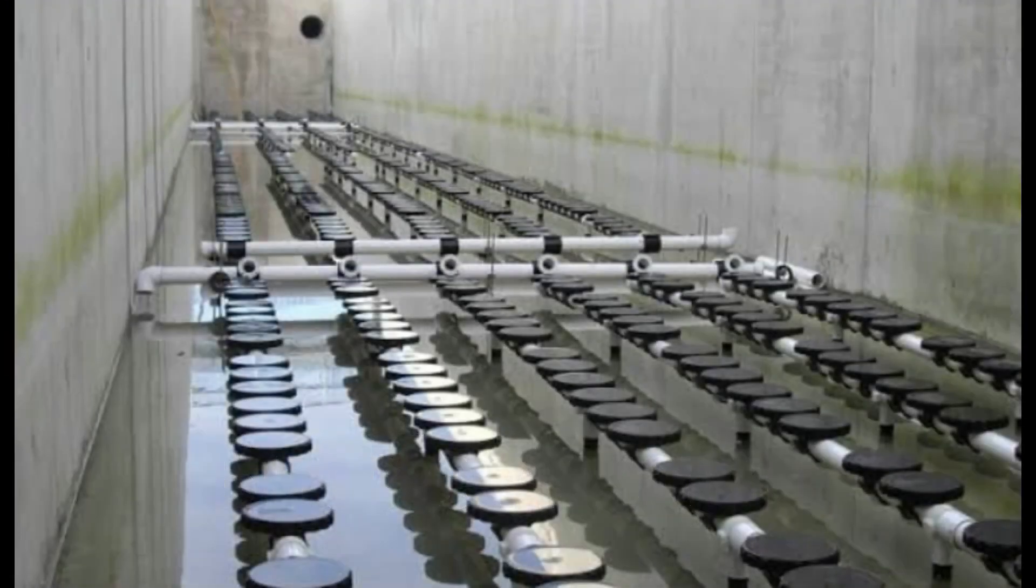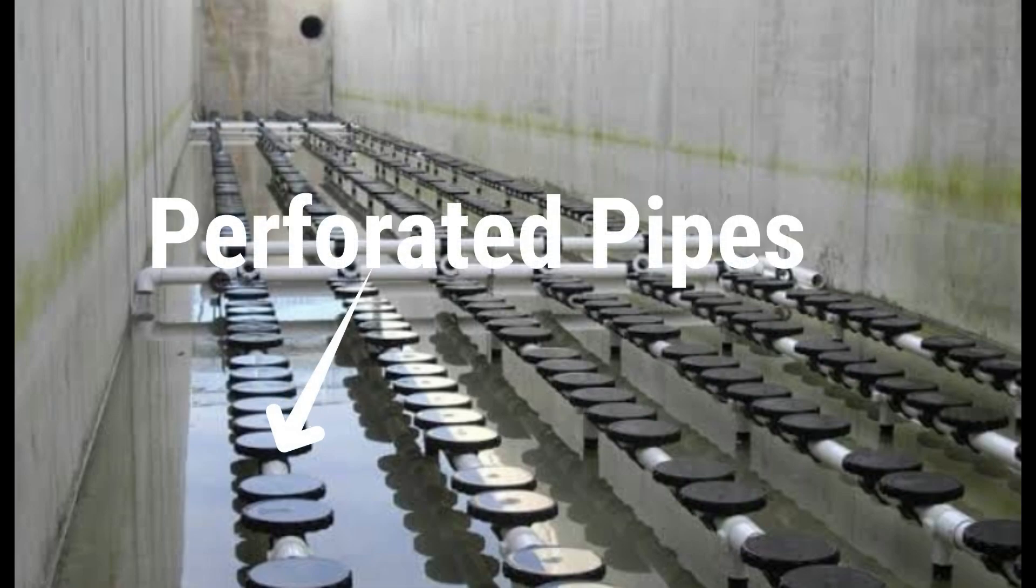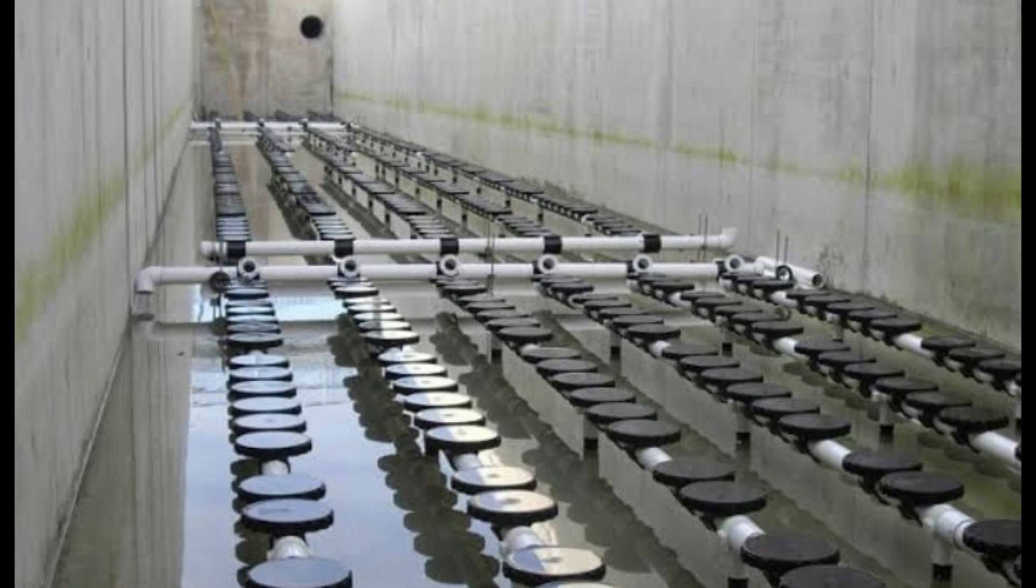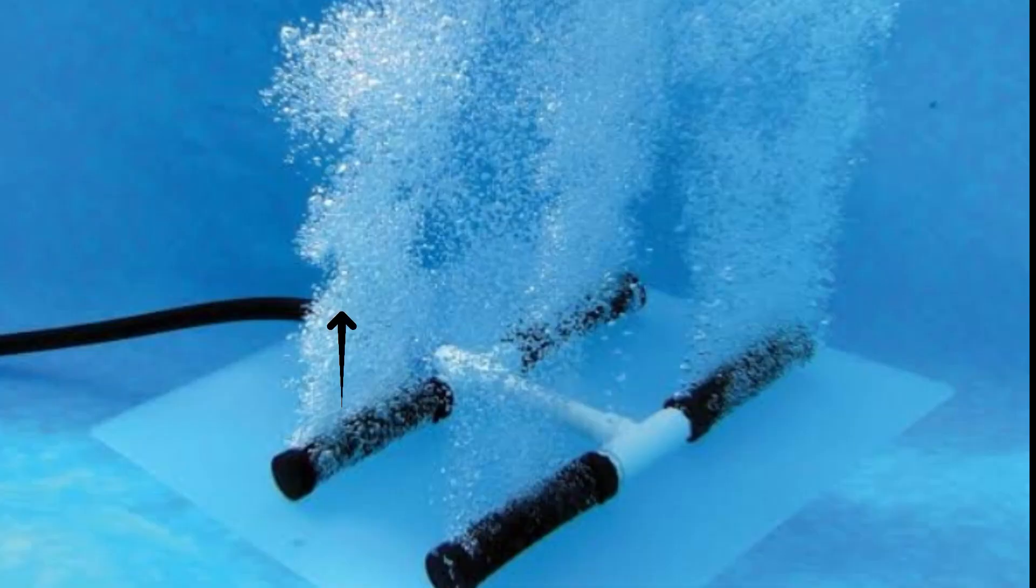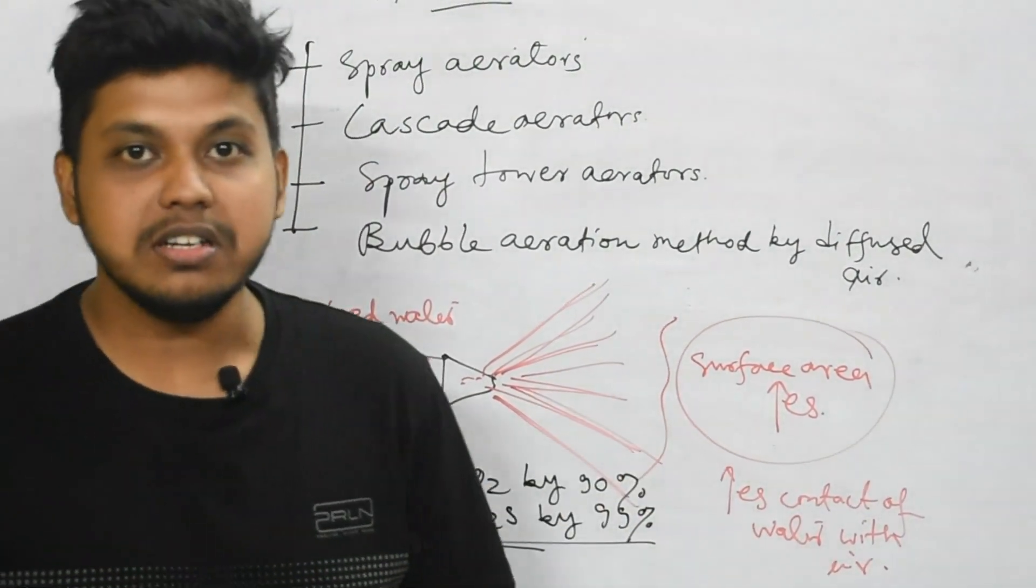Starting with the bubble aeration system, you can see these are perforated pipes consisting of holes from which pressurized air is sent and the bubbles are formed. These bubbles are causing the aeration. Hope you have understood this screening and aeration process.